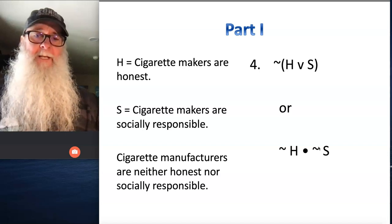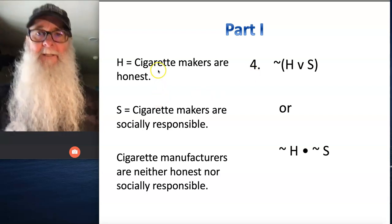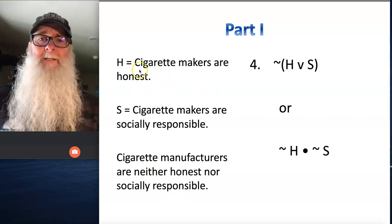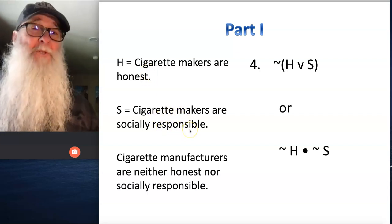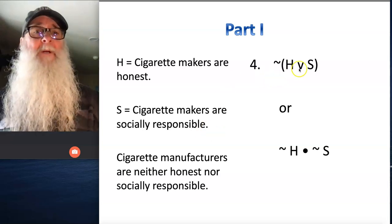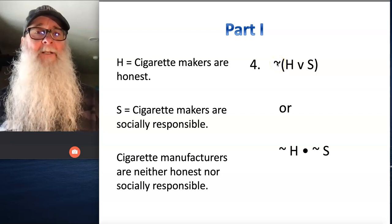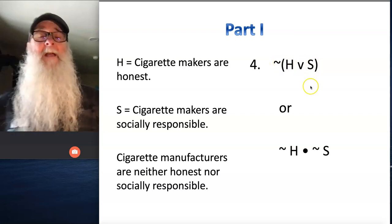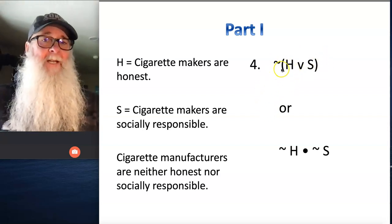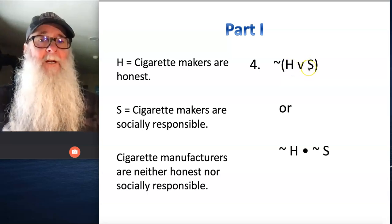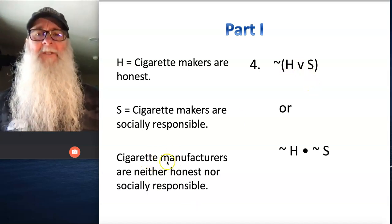Number four, we've got a tricky sentence here because it appears as though it's a simple sentence, but it's actually a compound sentence. The two sentences that make up this compound sentence are 'cigarette makers are honest' and 'cigarette makers are socially responsible,' and there are two different ways we can translate this. One of those ways is using a wedge, and if we use the wedge to translate this statement, we're going to write it like this: tilde, parentheses, H wedge S. And the way that this symbolized statement would read is: it is not the case that either cigarette makers are honest or cigarette makers are socially responsible. It's neither of those things, and that's what this statement says.